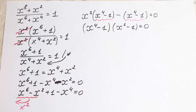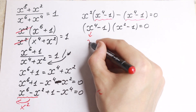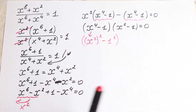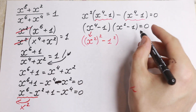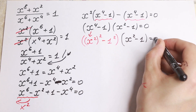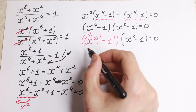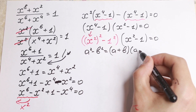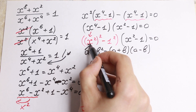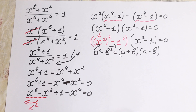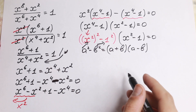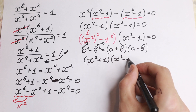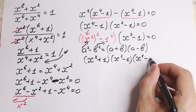Moreover, we can write x⁴ as (x²)² minus 1², so we can use the difference of squares formula. We know that a² minus b² equals (a plus b)(a minus b). In our case a equals x² and b equals one. Applying this formula, we get (x² plus one)(x² minus one)(x² minus one) equal to zero.